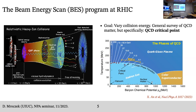In the beam energy scan program, the idea is to vary collision energy to probe different regimes of the phase diagram. One of the main goals is to find the QCD critical point. For the anatomy of a collision: it has some initial state. For very high energy collisions, that's an energy density plane because the nuclei are moving so fast they pass through each other, leaving a field of energy. From there, you form a quark-gluon plasma phase which expands and cools — this is the hydrodynamic stage. Then you have hadronization, kinetic freeze-out, and particles reach your detector. This picture is very well defined for high energy collisions.